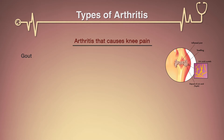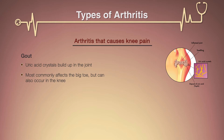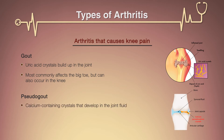Gout is a type of arthritis that occurs when uric acid crystals build up in the joint. While gout most commonly affects the big toe, it can also occur in the knee. Pseudogout, often mistaken for gout, is caused by calcium-containing crystals that develop in the joint fluid. Knees are the most common joint affected by pseudogout.